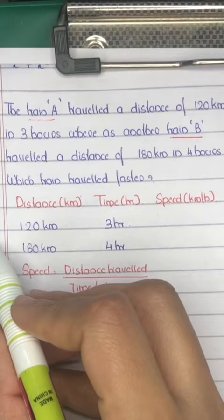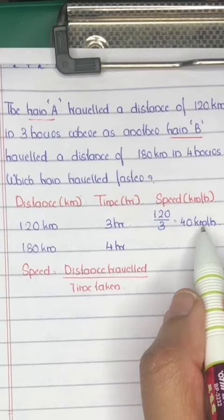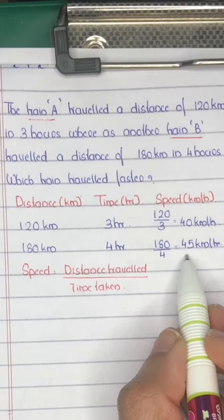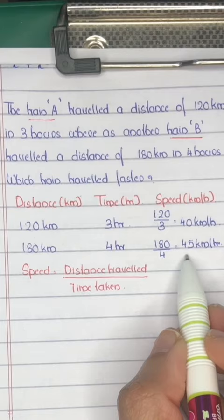Speed of Train A is equal to 120 divided by 3, which equals 40 kilometers per hour. Speed of Train B is 180 divided by 4, which equals 45 kilometers per hour. The question is: which train traveled faster? Since the speed of Train B is higher, Train B has traveled faster.